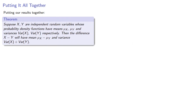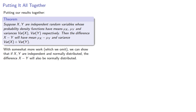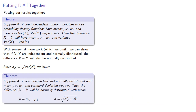Putting our results together: suppose X and Y are independent random variables whose probability density functions have means mu_x, mu_y and variances Var(X), Var(Y) respectively. Then the difference X minus Y will have mean mu_x minus mu_y and variance Var(X) plus Var(Y). With somewhat more work which we omit, we can show that if X and Y are independent and normally distributed, the difference X minus Y will also be normally distributed. Finally, since the standard deviation is the square root of the variance, if X and Y are independent and normally distributed with given means and standard deviations, then the difference will also be normally distributed with mean equal to the difference and standard deviation equal to the square root of the sum of the squares.